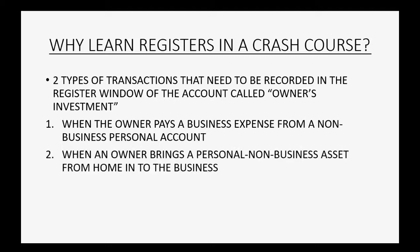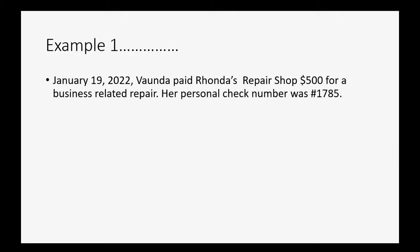The second is when an owner brings a personal non-business asset from home into the business to be used for business purposes. Let's consider the first example: on January 19th, 2022, Vonda paid Rhonda's Repair Shop $500 for a business-related repair, using her personal check number 1785.